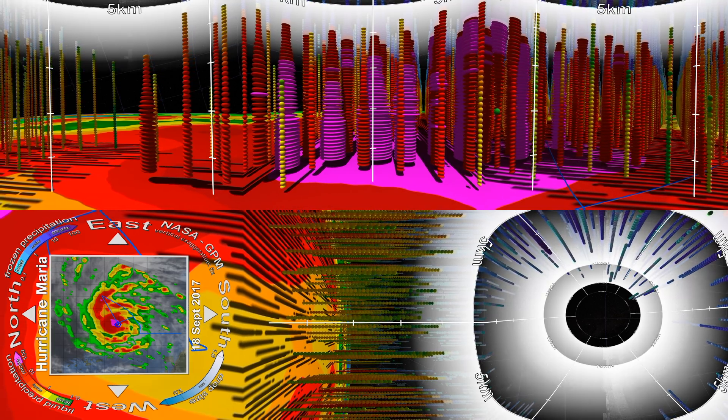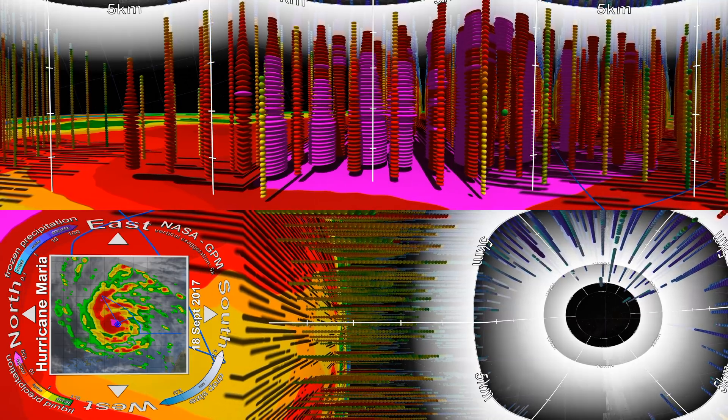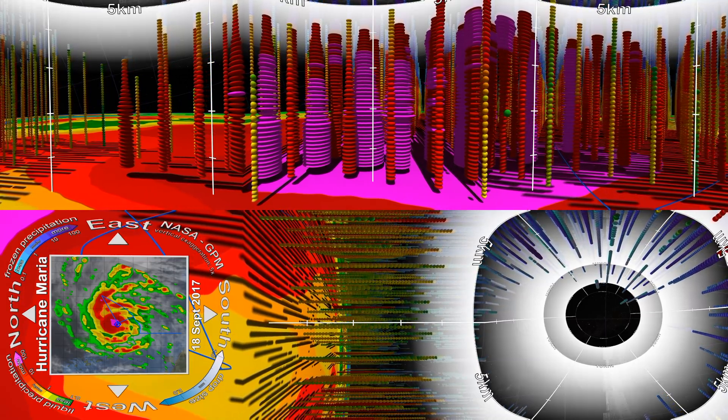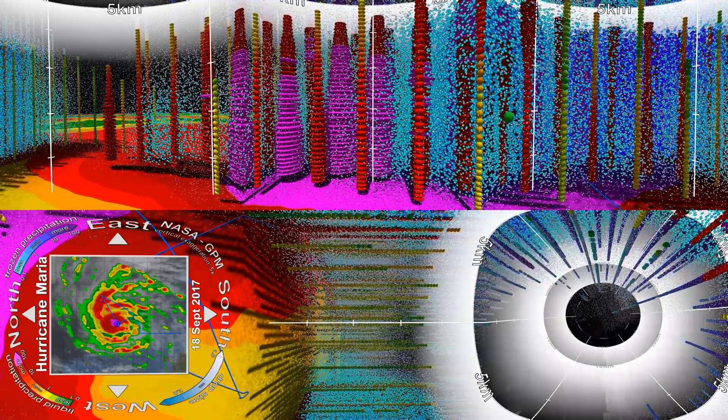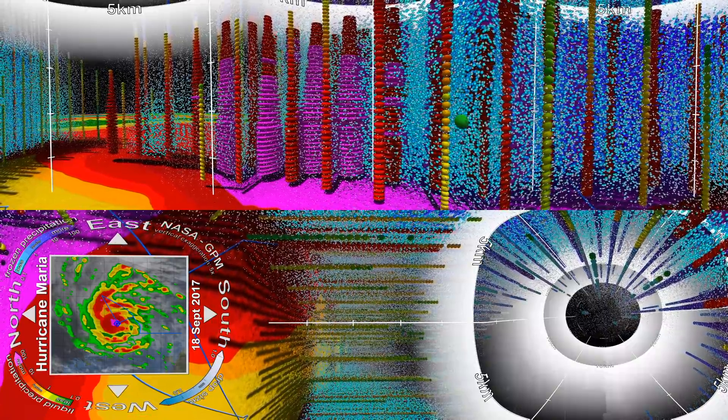While NASA's GPM satellite can detect big features like the shape of the eye wall, it can also measure tiny precipitation particles. These blue drops show the size and density of ice and water particles inside Hurricane Maria, which is also known as drop size distribution. Big drops are colored in dark blue and small drops in light blue and white. Looking at drop sizes and rainfall rates provides a key part of the equation in understanding hurricane intensity.